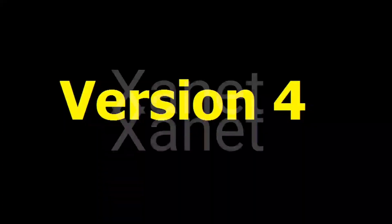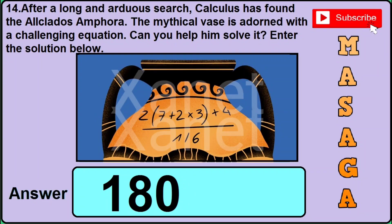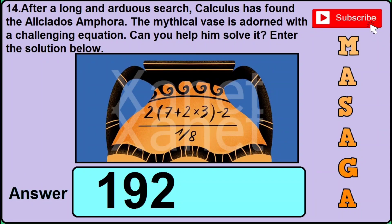Now in version 4 of this question it is written here 2(7 + 2 × 3) + 4 ÷ (1/6). Then the correct answer for this question would be 180, so you need to type 180 in the option. Now version 5 — the last version — it is written here 2(7 + 2 × 3 − 2) ÷ (1/8). Then the correct answer would be 192, so just type 192.